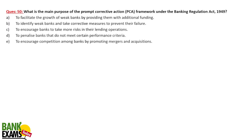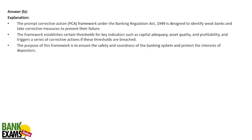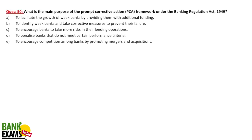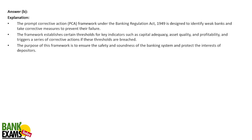The main purpose of the PCA framework is to identify weak banks and prevent their failure. Many actions are taken — banks under PCA cannot open new branches, and management changes and various conditions are imposed. That is what the Prompt Corrective Action framework is about.